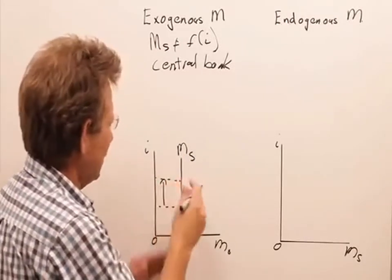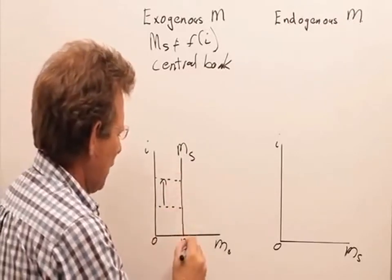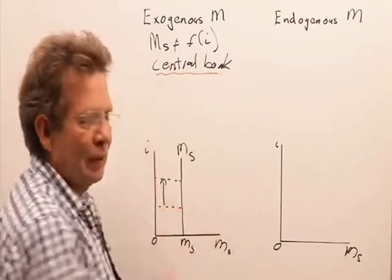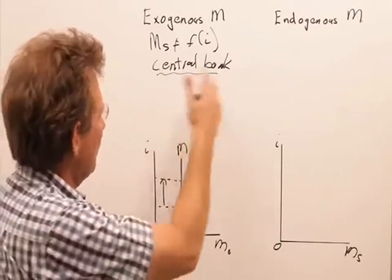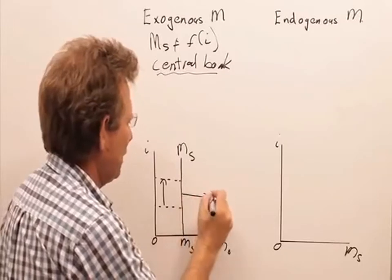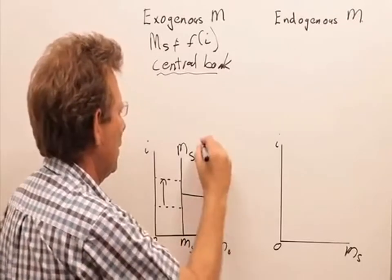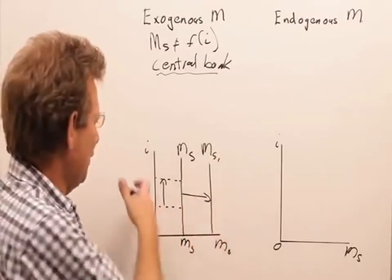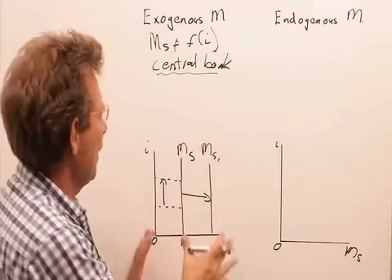The change in the interest rate does not affect the amount of money in the economy. The central bank, however, can control the money supply. And if they wish, they can increase the money supply, which is then a rightward shift of the money supply function to the right. So at every interest rate there is a higher supply of money.